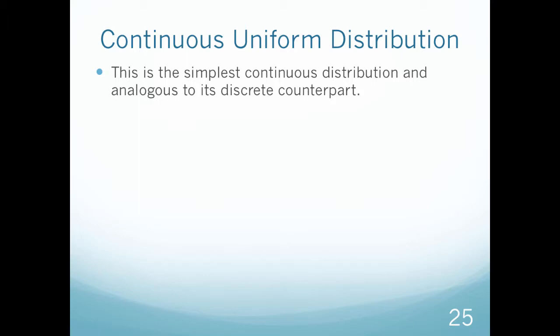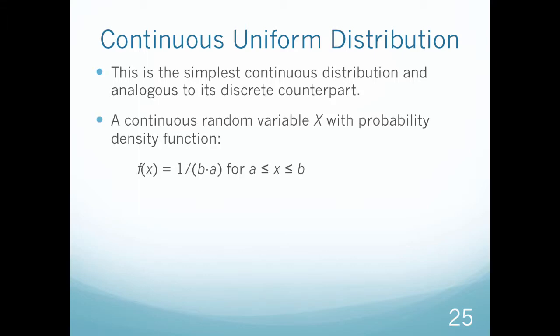This is the simplest continuous distribution, and it's analogous to its discrete counterpart. A continuous random variable x with the probability density function equal to f of x equals 1 over b minus a, for x being between a and b. Here's a graph of it. A continuous uniform PDF just looks like this, where this value, or its height, is equal to 1 over b minus a.